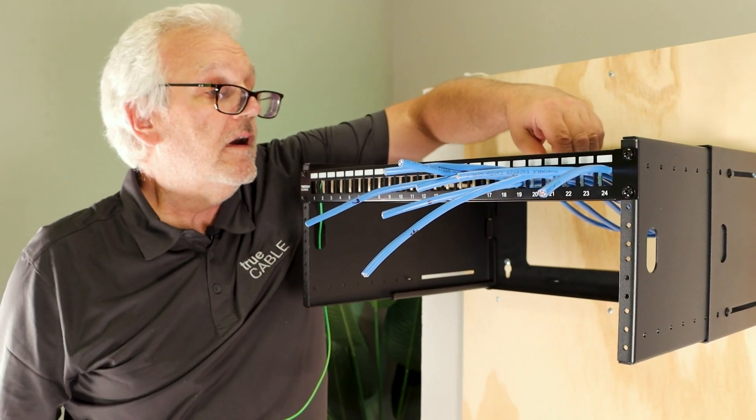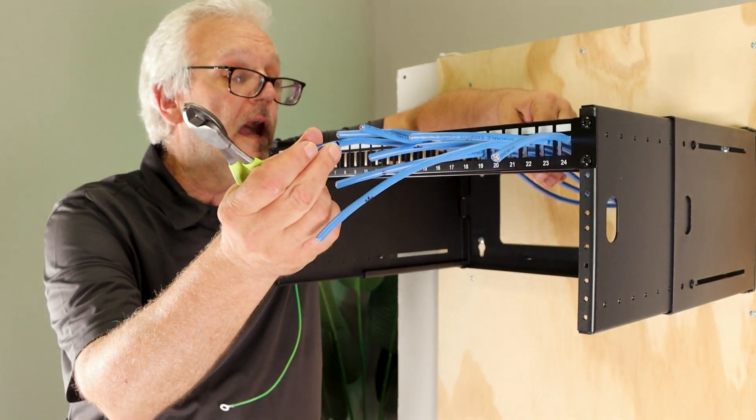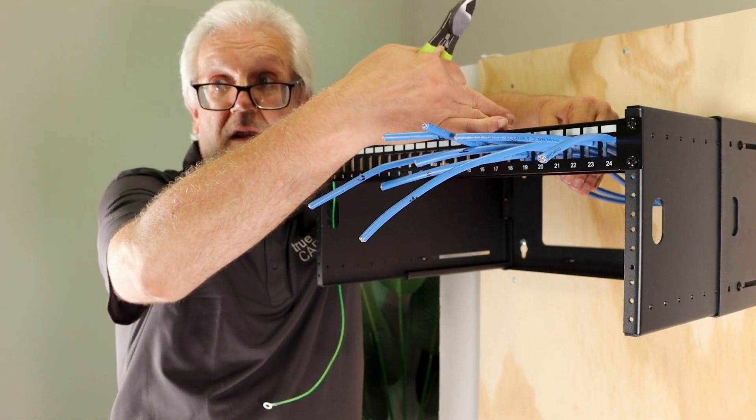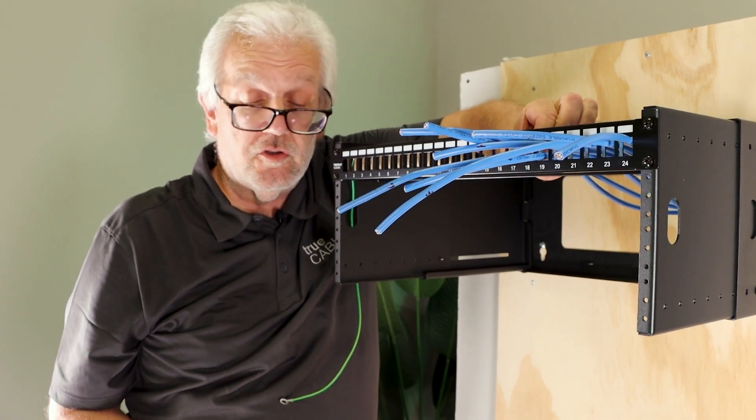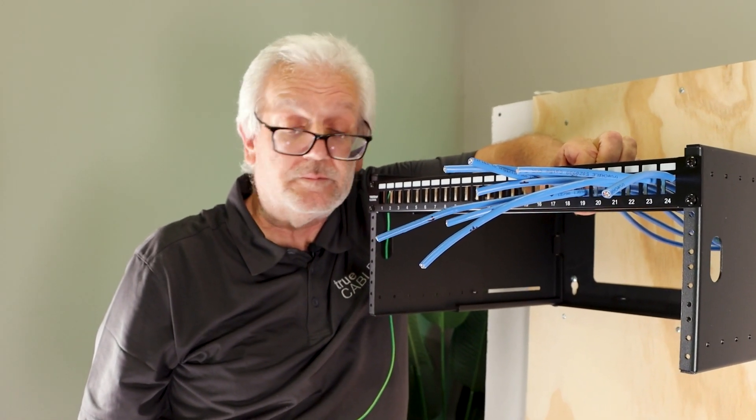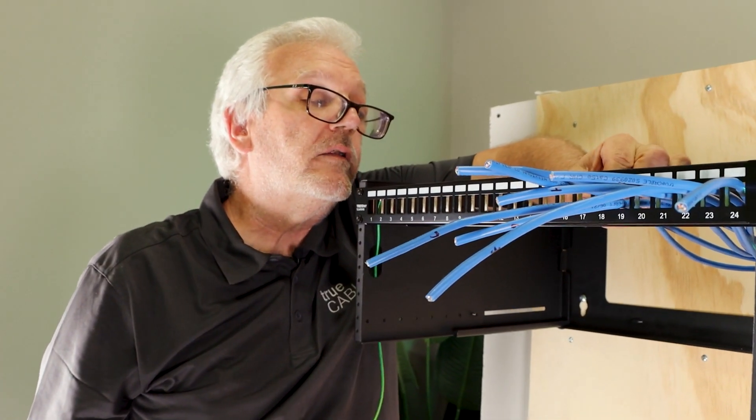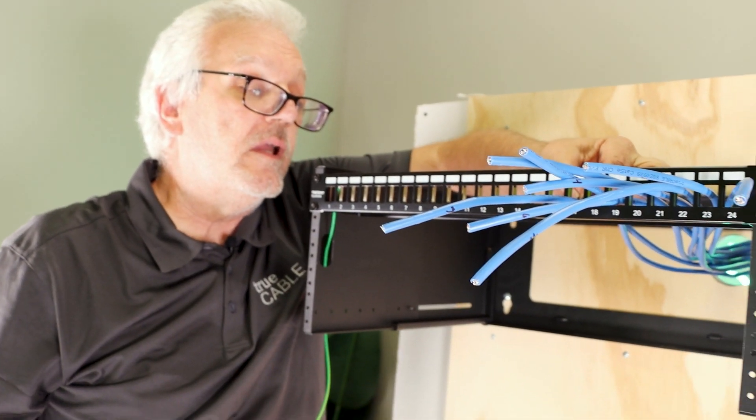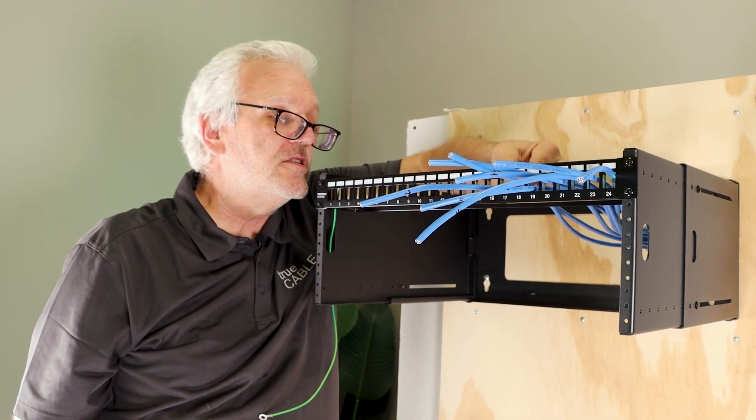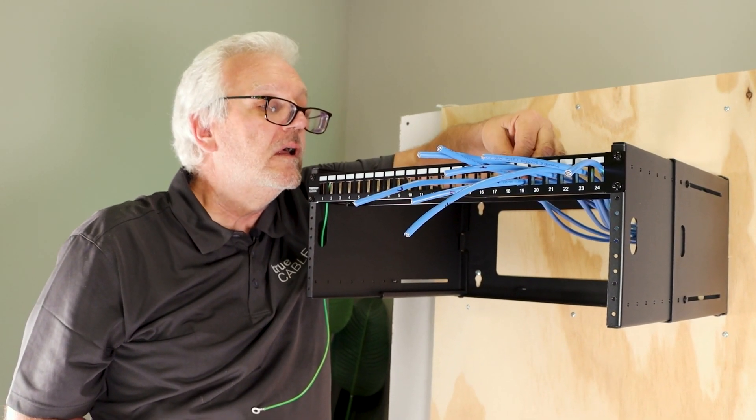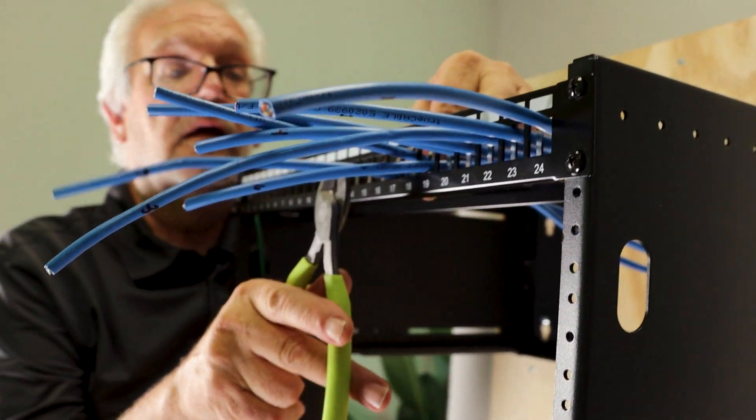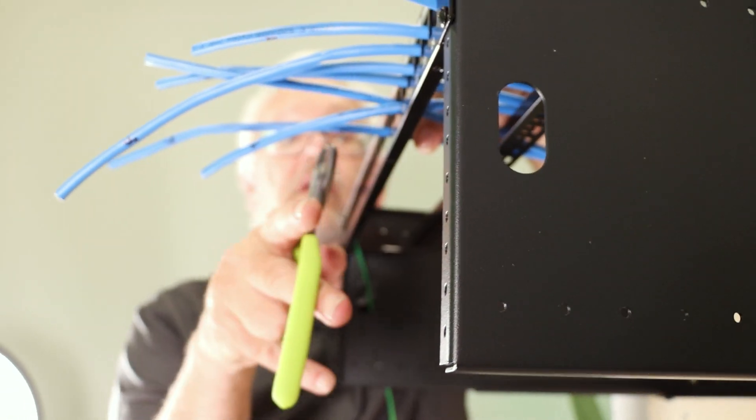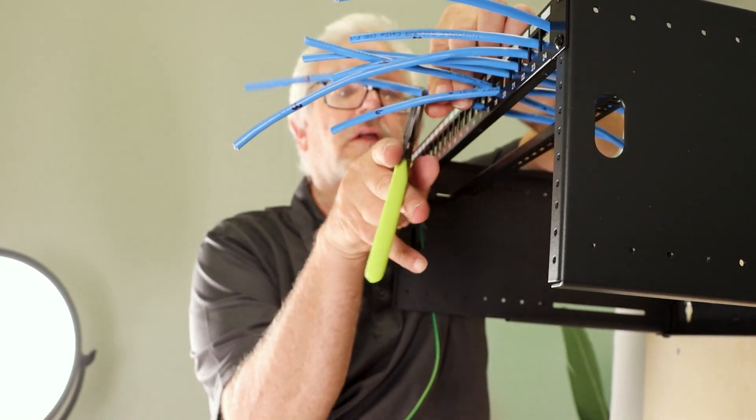Now we don't want to cut it off where we put our line. Our line just marks where the patch panel is, so that's going to be a useful mark for when we terminate, because we want that mark to be up inside the keystone jack. So I'm going to cut these with about three inches to spare here.